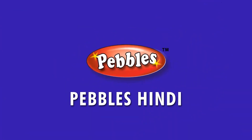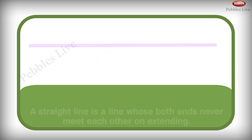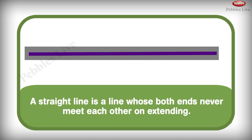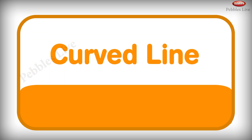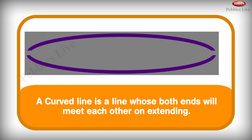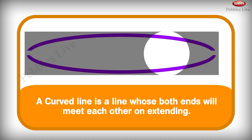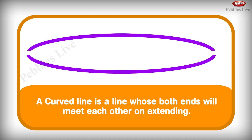Pebbles Hindi. A straight line is a line whose both ends will not meet each other on extending. A curved line is a line whose both ends will meet each other on extending.